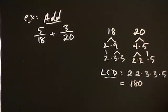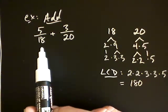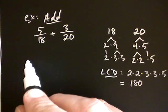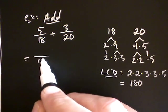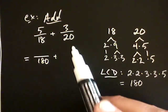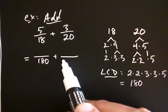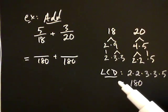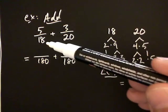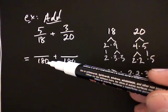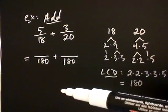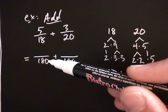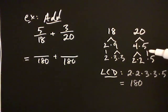What we then do is take that LCD and rewrite these fractions with denominator one eighty. This fraction, instead of being five over eighteen, is going to turn into something over one eighty. And the same thing for the second fraction — instead of being three over twenty, it's going to be something over one eighty, and those numerators are to be determined. There are two ways to do this; I can just see that eighteen times ten gives one eighty, but there's another way of getting that ten that will be useful when working with rational expressions.